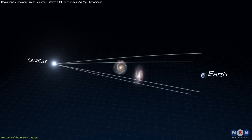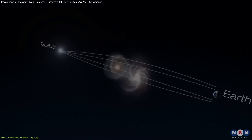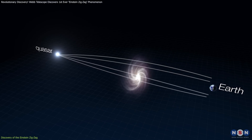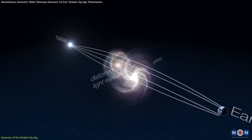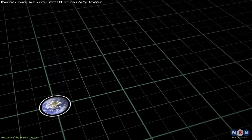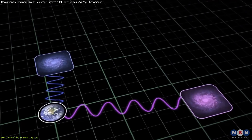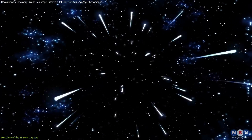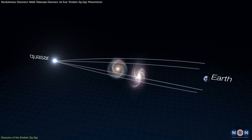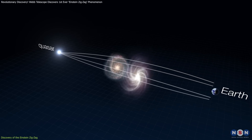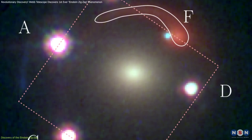Adding to the uniqueness of this system is the role of two galaxies acting as lensing agents. Typically, a single galaxy creates a gravitational lens. In this case, the closer galaxy — whose light has been traveling to us for 2.3 billion years — and the more distant galaxy, located 10 billion light-years away, both contribute to lensing the quasar's light. This rare dual-lens configuration creates a complex optical path, bending the light into its distinctive zigzag arrangement.